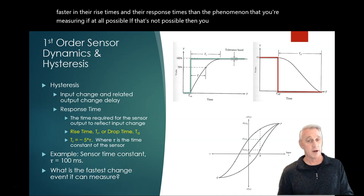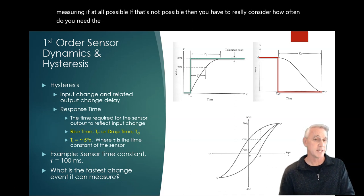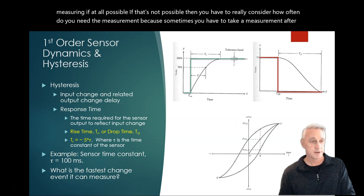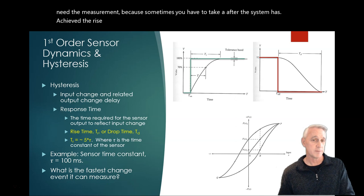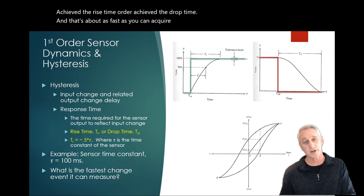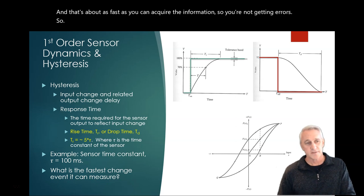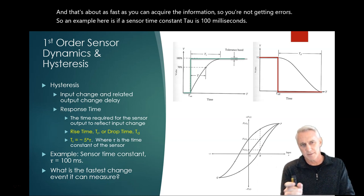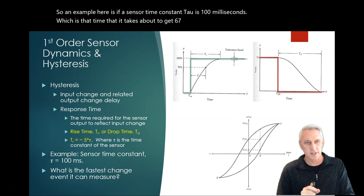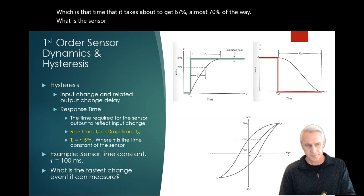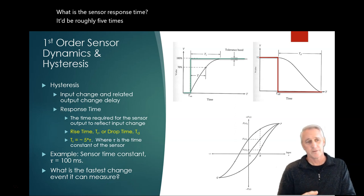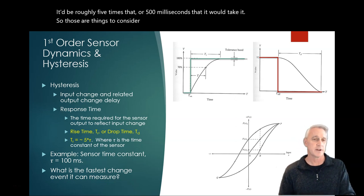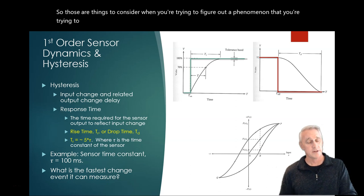You want sensors that are much faster in their rise times and their response times than the phenomenon that you're measuring, if at all possible. If that's not possible, then you have to really consider how often do you need the measurement, because sometimes you have to take a measurement after the system has achieved the rise time or achieved the drop time. An example here is if a sensor time constant tau is 100 milliseconds, which is that time that it takes to get about 67%, almost 70% of the way, what is the sensor response time? It'd be roughly five times that, or 500 milliseconds. So those are things to consider when you're trying to figure out a phenomenon that you're trying to measure and how do you choose the right sensor or transducer.